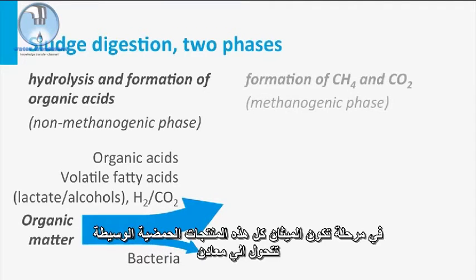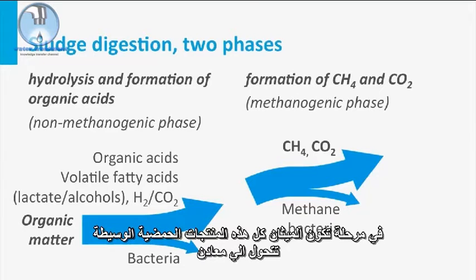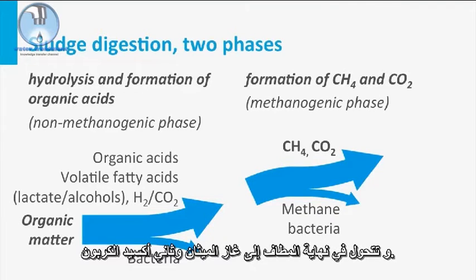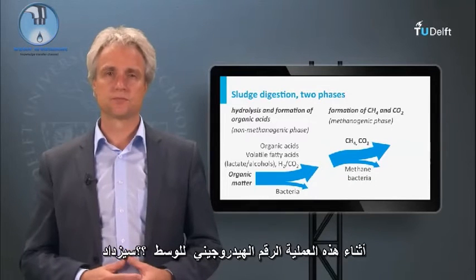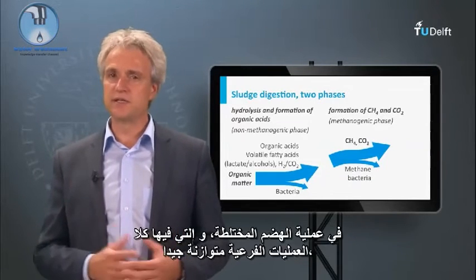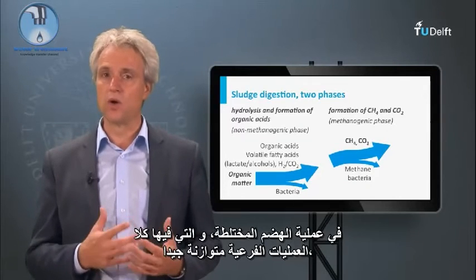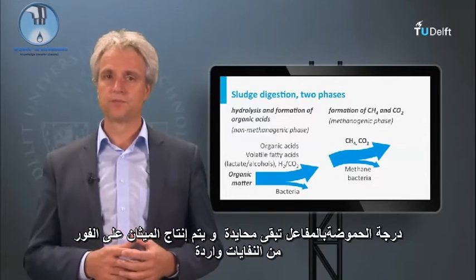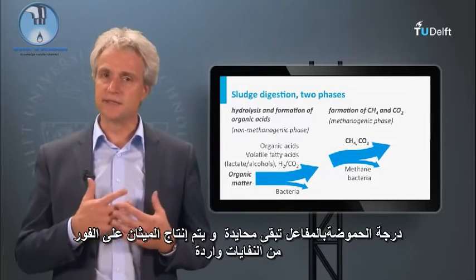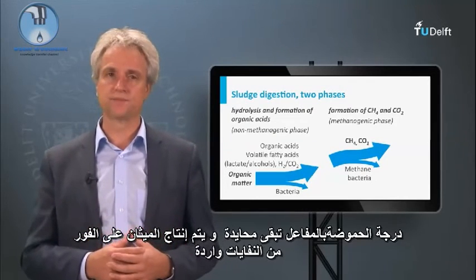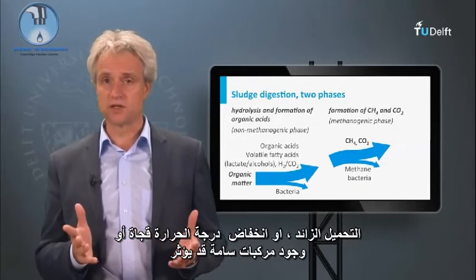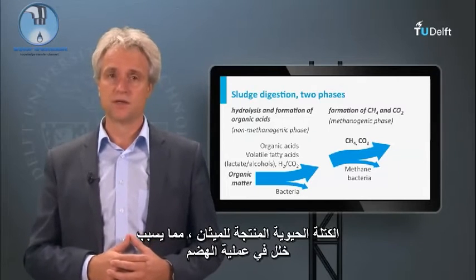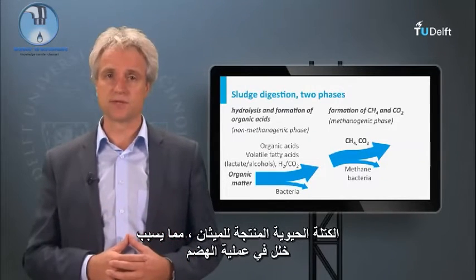In the methanogenic phase, all these intermediate acidified products are further mineralized and ultimately converted to methane and carbon dioxide. During this process, the pH of the medium will increase. In a mixed digester process, in which both sub-processes are well-balanced, the reactor pH stays neutral. Methane is instantaneously being produced from the incoming waste. Overloading, sudden temperature drops, or the presence of toxic compounds may impact the methanogenic biomass, resulting in an imbalance in the digestion process.